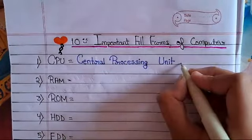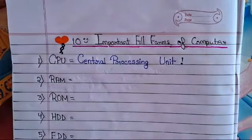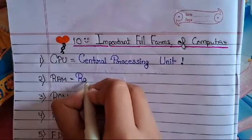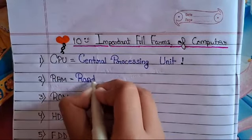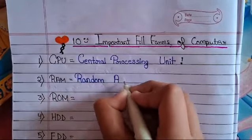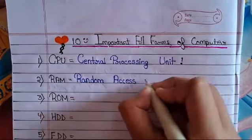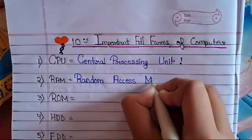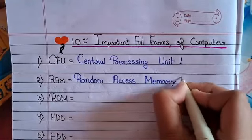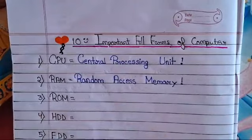The full form of CPU is Central Processing Unit. The full form of RAM is Random Access Memory.